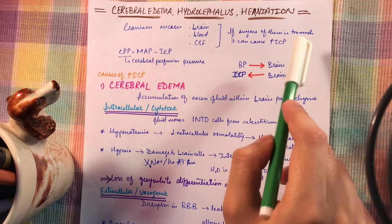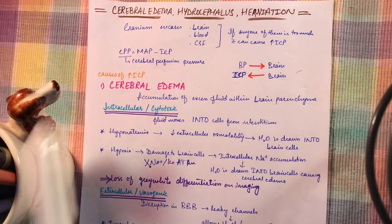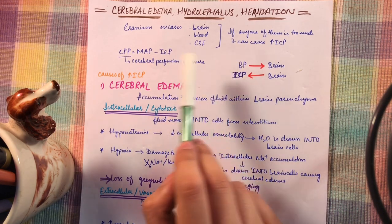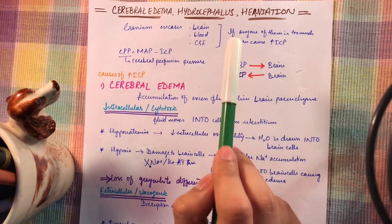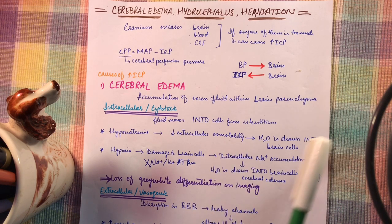The cranium contains brain, blood, and CSF. If any one of them is too much, it can cause increased intracranial pressure. CPP is the cerebral perfusion pressure — it tells how the brain is receiving blood, and it is obtained by subtracting intracranial pressure from mean arterial pressure. Importantly, intracranial pressure has nothing to do with blood pressure: blood pressure forces blood into the brain and intracranial pressure squishes it back out. If intracranial pressure is too high, it can impair blood flow and cause brain ischemia.